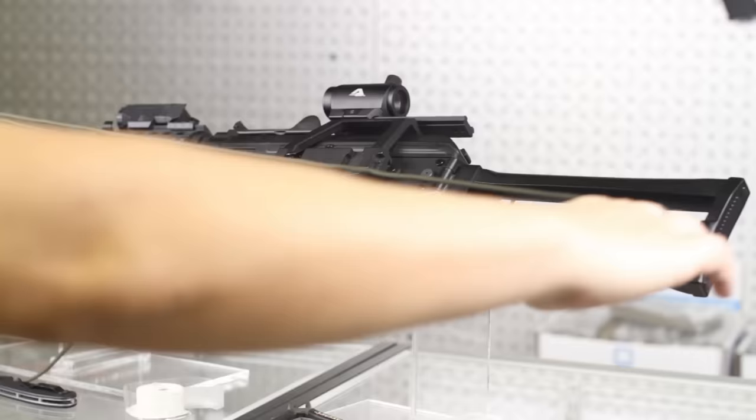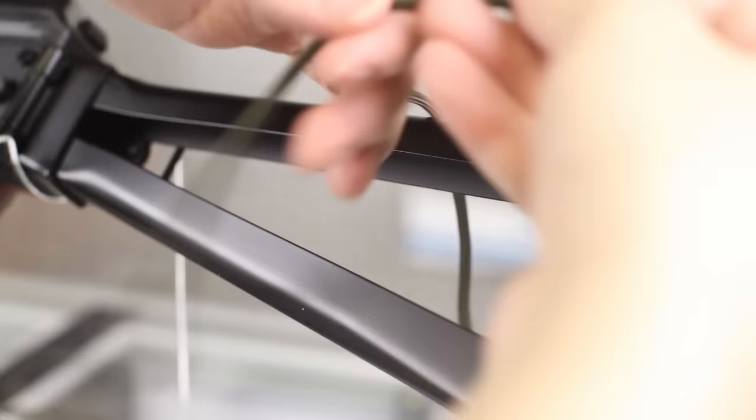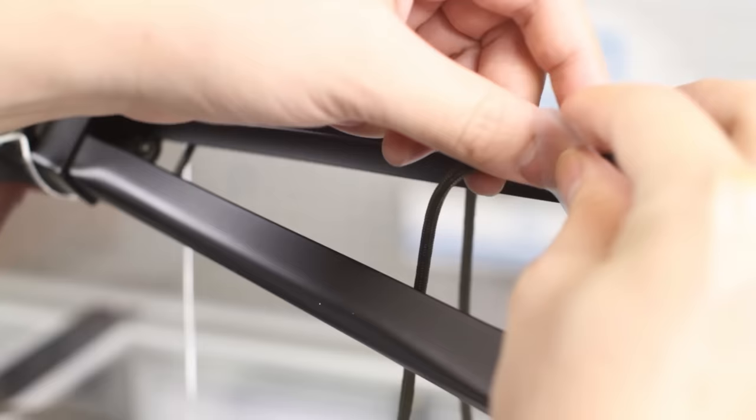To start, cut off a nice long section of paracord. We went with roughly four times the length of the gun, which covers most of the stock, but you can certainly cut off more if you want to cover the entire stock. Try to use a sharp knife or scissors for a clean cut. With one end at the front of the stock, make a loop at the back of the stock and tape it into place. Any tape will do, this is only temporary.